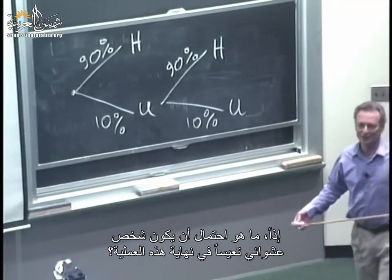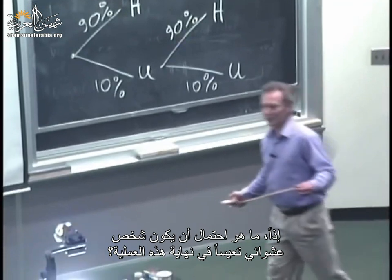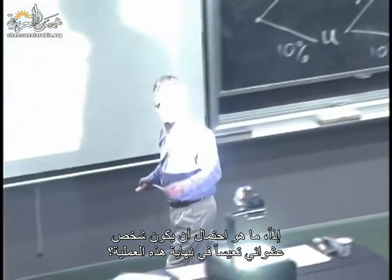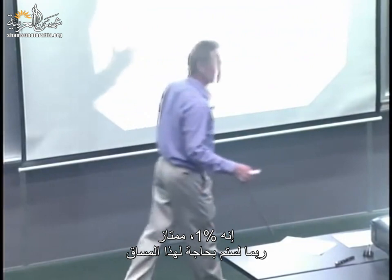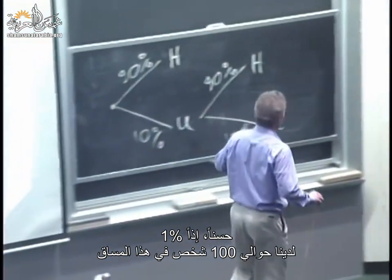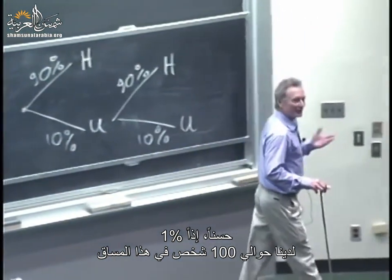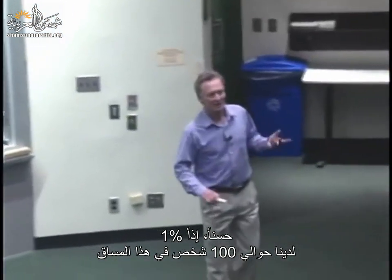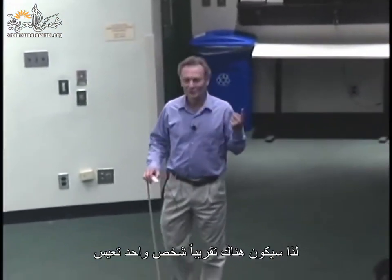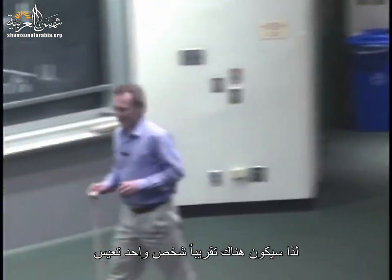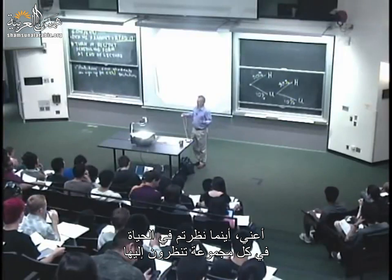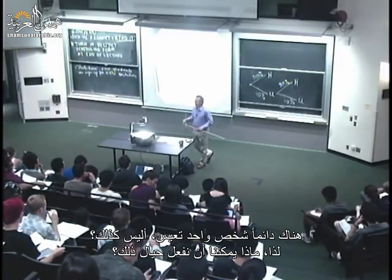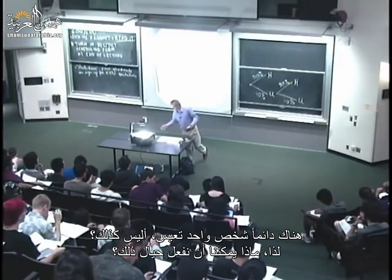So what's the probability that a random person is going to be unhappy at the end of this process? It's 1%. We have about 100 people in this class, so there's going to be about one unhappy person. Anywhere you look in life, in any group, there's always one unhappy person, right? So what can we do about it?